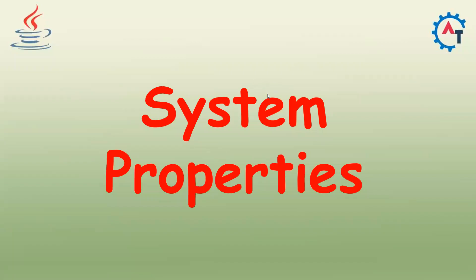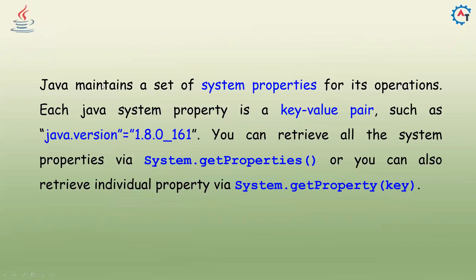In this video we will see system properties in Java. Java maintains a set of system properties for its operations. Each Java system property is a key-value pair, such as 'java.version' equals to some version string. You can retrieve all the system properties via System.getProperties(), or retrieve an individual property via System.getProperty() by specifying the key.